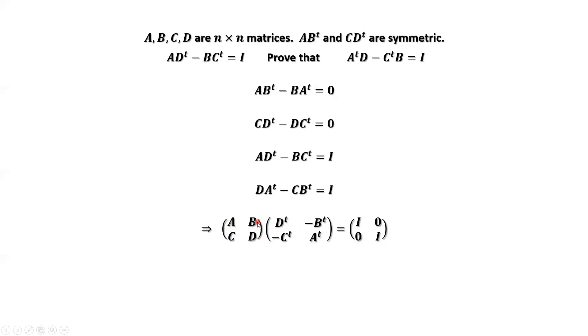For example, the first row times first column equals I. We use this result. A times DT minus B times CT equals I. The first row times second column equals 0. We use this result. The second row times the first column equals 0. We use this result.